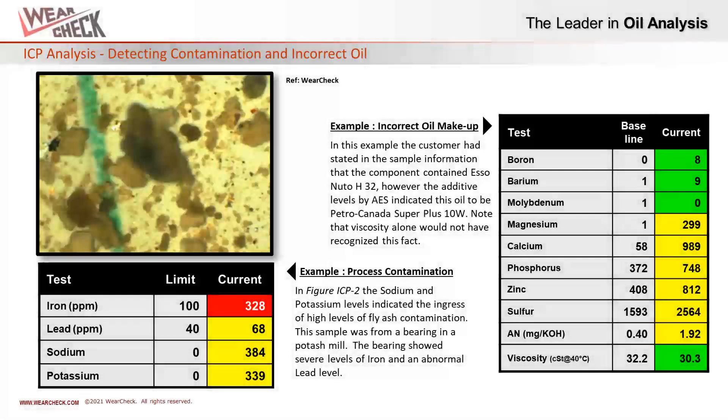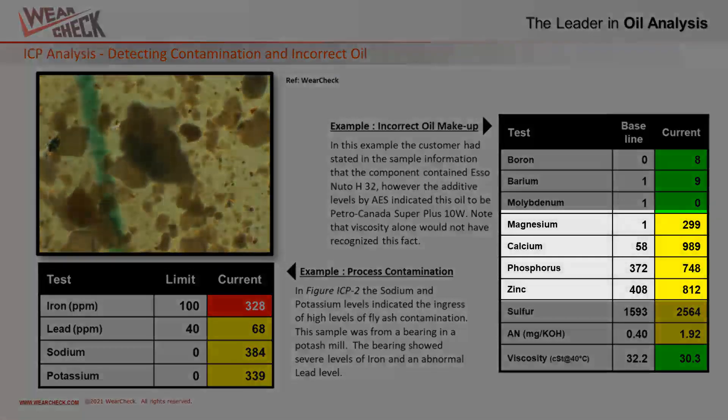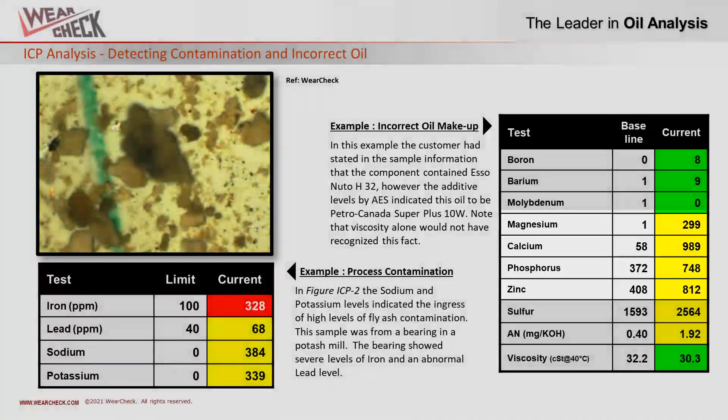Other elements, such as phosphorus, zinc, calcium, and magnesium, indicate what type of oil additives are present, and tell us if the correct type of oil is being used in the machine.